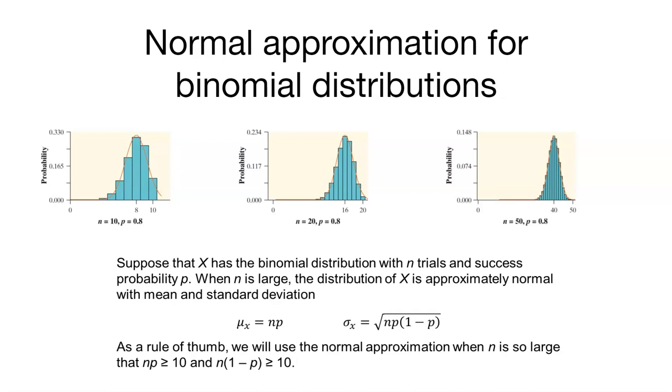As a general rule of thumb, we'll use the normal approximation when n is large enough that n times P is greater than 10, and n times 1 minus P is greater than 10. This will be a helpful tool when looking at binomial data.